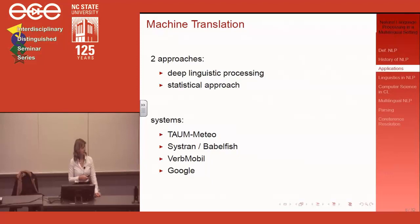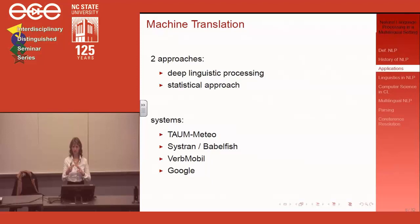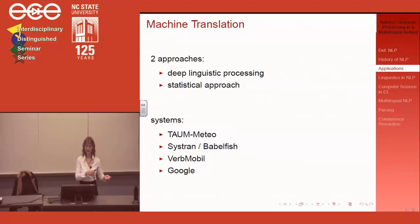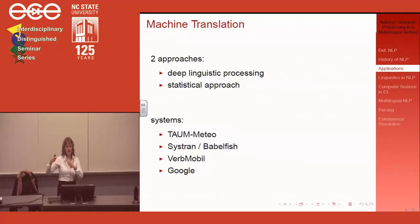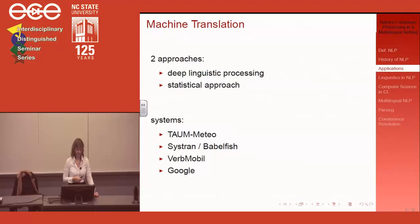I want to talk about machine translation specifically and then about parsing and co-reference resolution. In machine translation you can have two approaches: deep linguistic processing, where you analyze the source language and convert it into the target language structure then generate the output; or a statistical approach, where you give it a lot of translated text and it figures out word correspondences statistically. One success story is the METEO system in Canada.